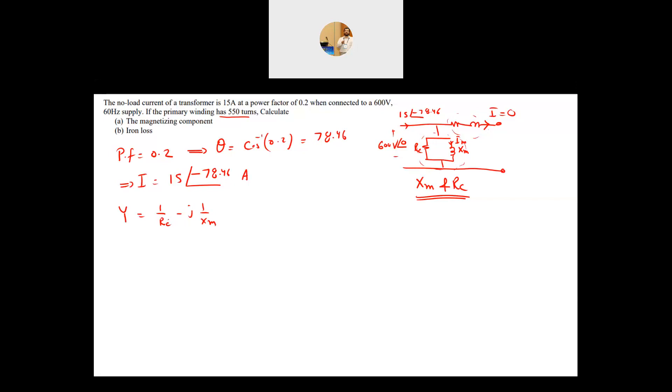This will equal 1 over RC minus j 1 over XM. If you find the impedance, then it will be RC times jXM divided by RC plus jXM, so it will be very hard to extract RC and XM from the equation. But if you find Y, it's much easier. Y is equal to the current, 15 angle of minus 78.46, divided by the voltage which is 600 angle of zero.